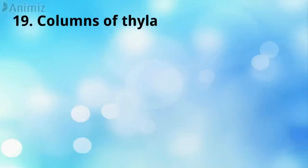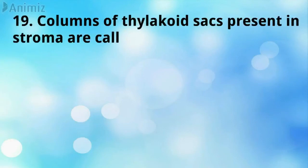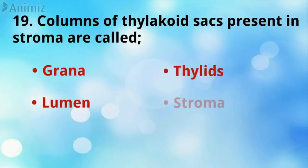Columns of thylakoid sacs present in stroma are called Grana.